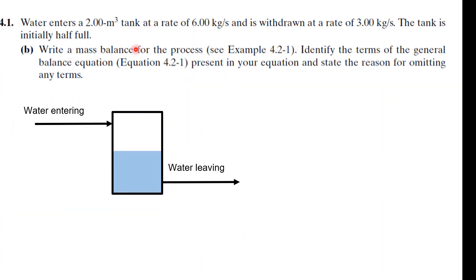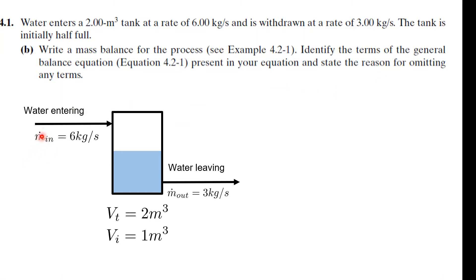Write a mass balance for the process — I have a couple of videos on the mass balance, and I'm going to make a ton more. So I'm going to start by labeling the system. We have ṁ_in. The dot on top represents that this is a rate — ṁ is mass per time, kilograms per second. The rate in is 6 kilograms per second, and the rate out is 3 kilograms per second — so ṁ_out. The total volume of the tank is 2 meters cubed, but the initial volume is half of that, simply 1 meter cubed.